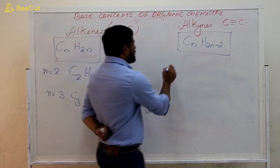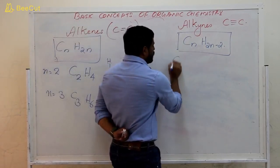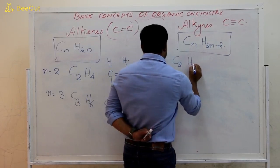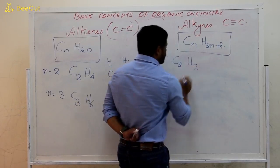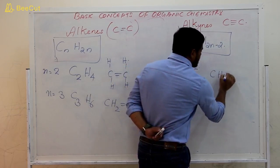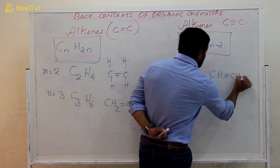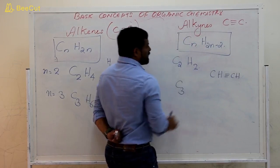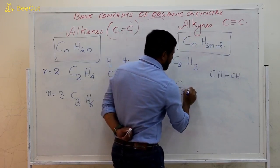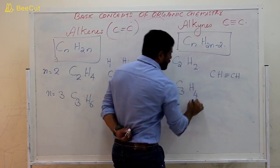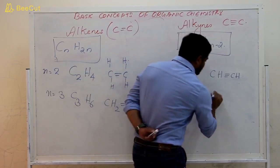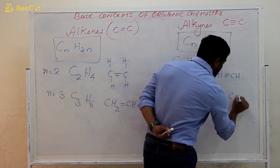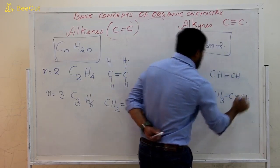For alkynes, the value of N equals 2 gives the compound C2H2, which is drawn as CH triple bond CH. The value of N equals 3 gives C3H4, which is drawn as CH3 single bond C triple bond CH.